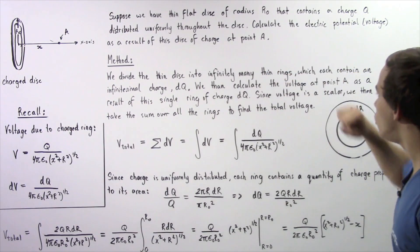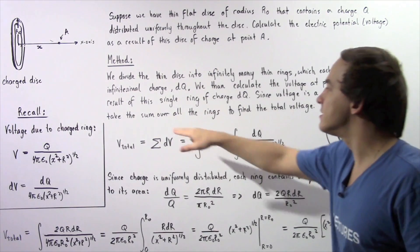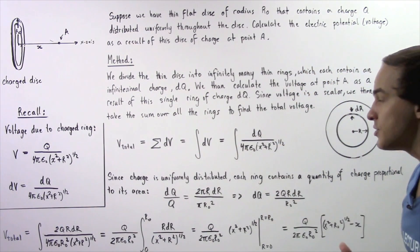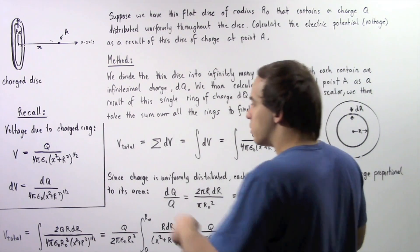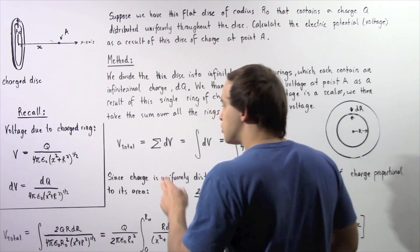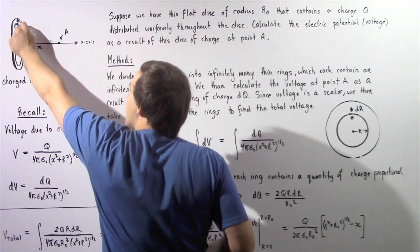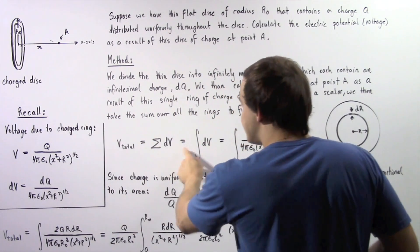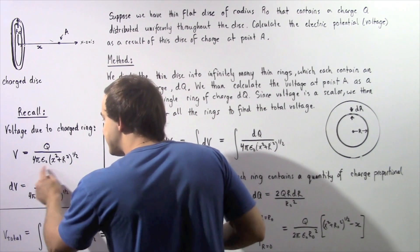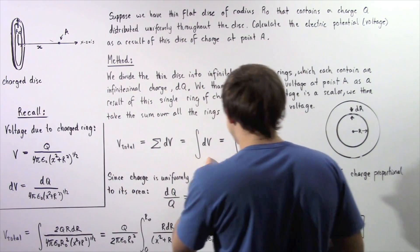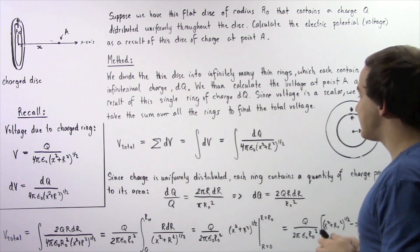Finally, since voltage is a scalar, to find the total voltage we simply take the sum over all of these rings — we take the integral as we'll see in just a moment. The total voltage is equal to the sum of all these infinitely small voltages dv as a result of all these rings, and this is equal to taking the integral of dv. Since dv equals this entire ratio, we replace dv with this equation as shown in the following step.